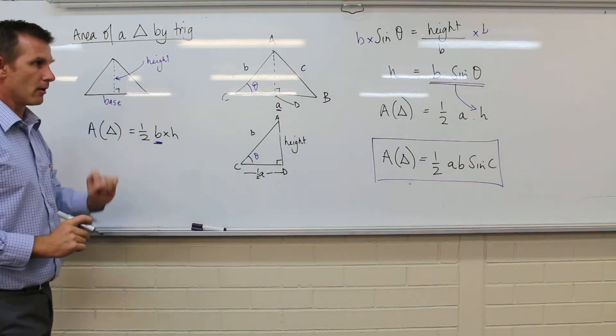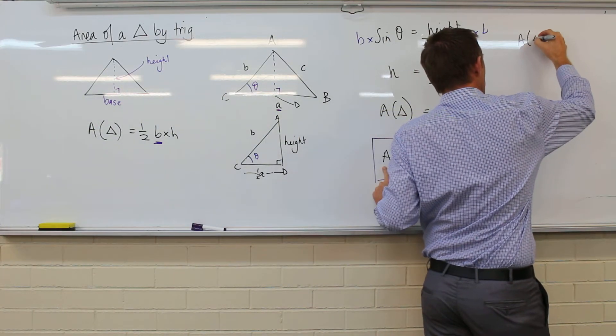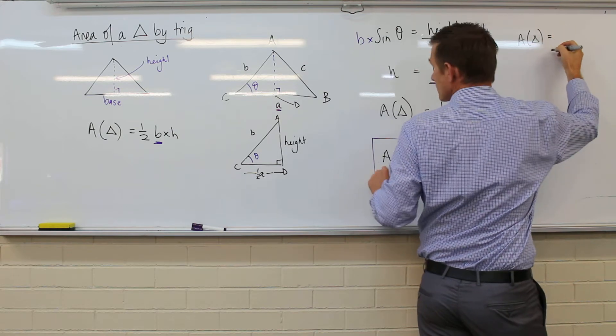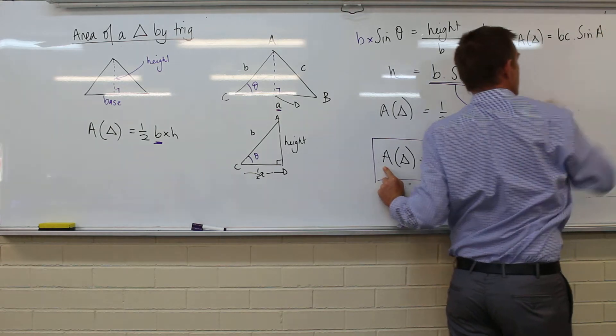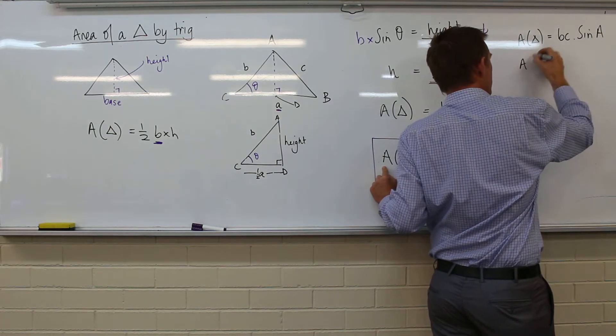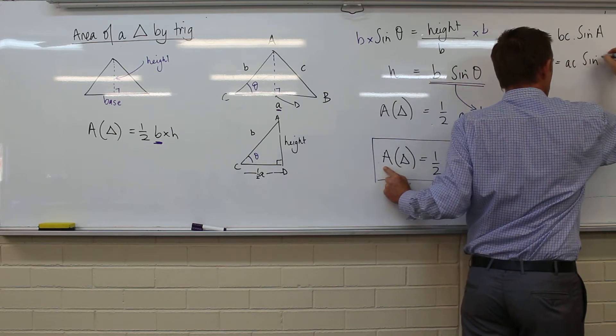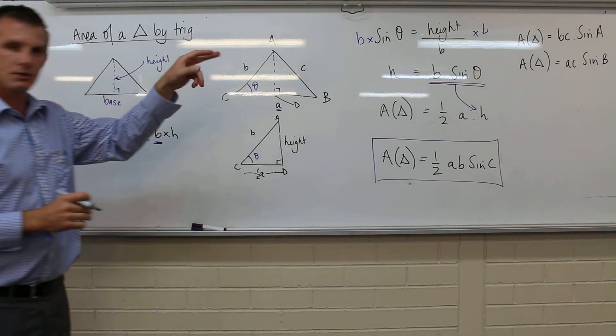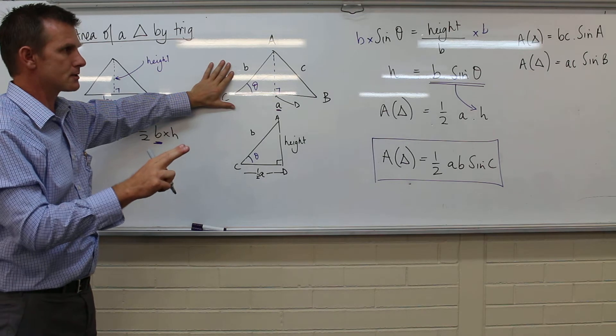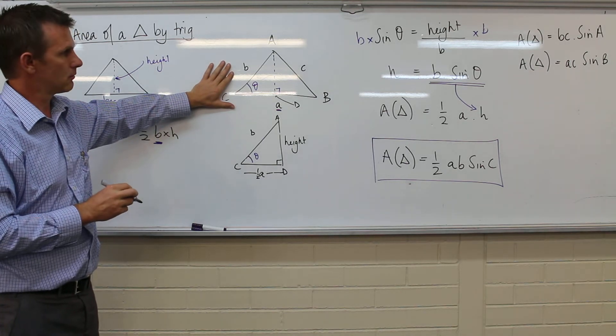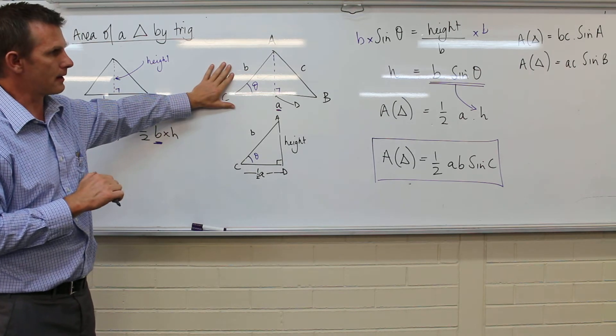That formula there I can rewrite a couple of different ways. I can also write area of a triangle equals BC times the sine of A. I can also write the area of a triangle equals AC times the sine of B. Notice in each of those cases, looking at our diagram here, it's two sides and the included angle, and that fixes us to a unique triangle, and therefore we can work out the area of it.